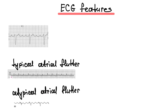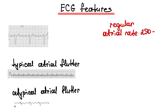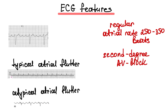ECG features: Rhythm is regular. The atrial rate is from 250 to 350 beats per minute, and the atrial rate is higher than the ventricular rate. Atrial flutter is always associated with second degree AV block, with conduction in a 2-to-1, 3-to-1, or 4-to-1 ratio.